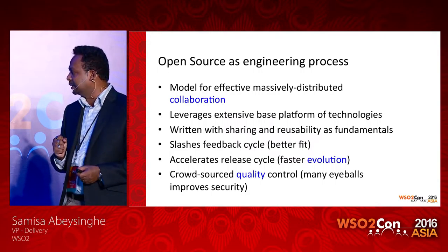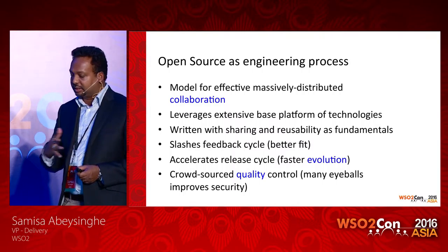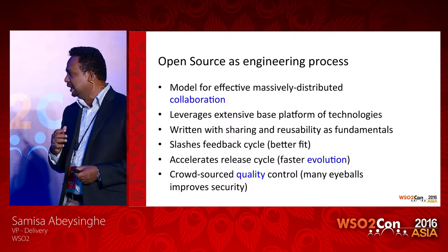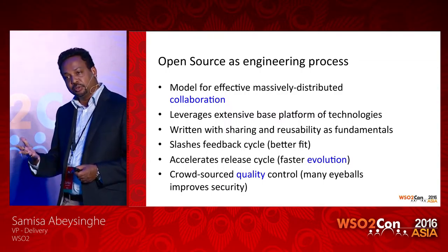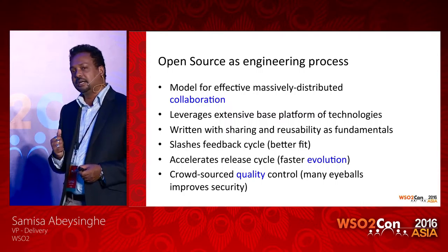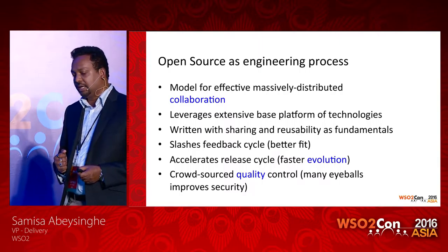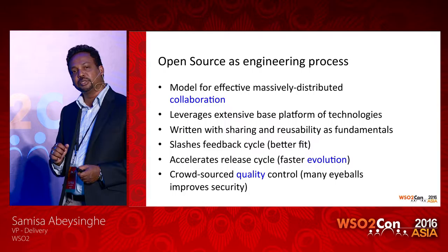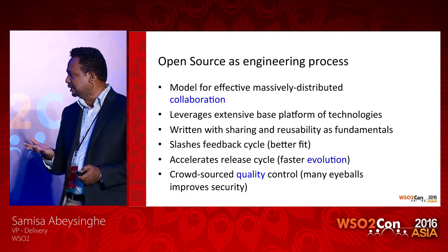Things such as collaboration, familiarity of the technology across the teams you are involved with, and crowd-sourced quality — where people who are trying to use your software are testing it for you and enhancing quality — are important aspects that can be brought about by using the open source process itself in order to build your software system in-house.